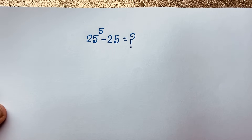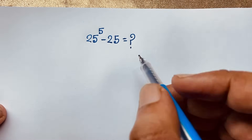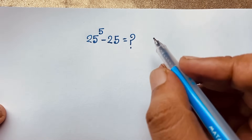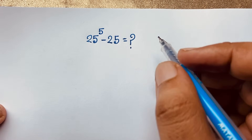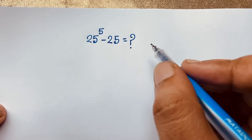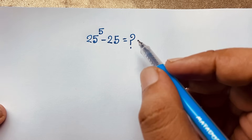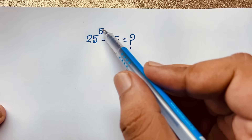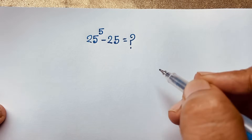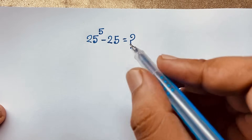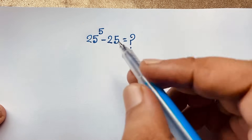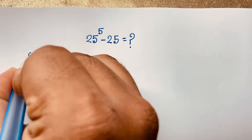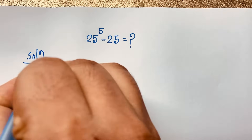Hello everyone, welcome to the classroom. Today we have a nice math problem to solve without a calculator. Our title calls it a Harvard University exam question, though it is not actually a Harvard question — I just use that title. The question is: 25 to the power 5 minus 25 equals what?